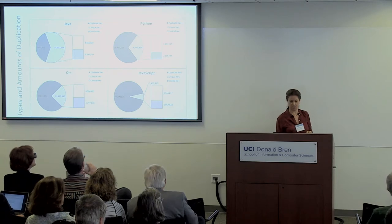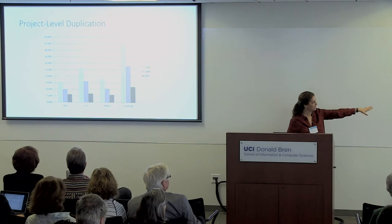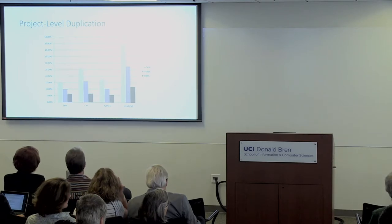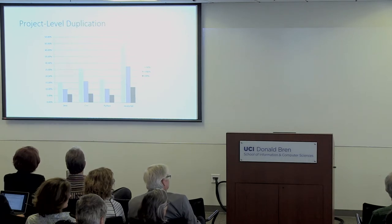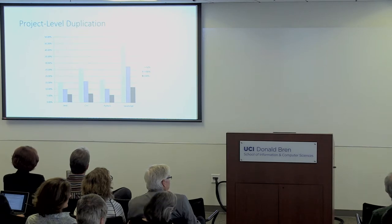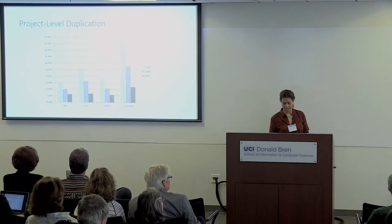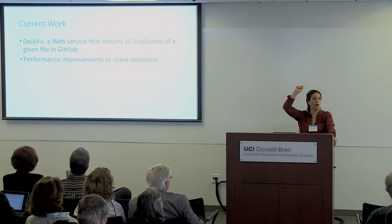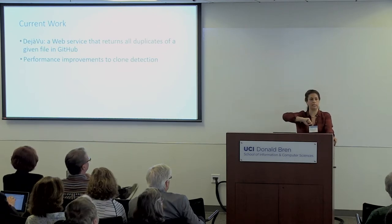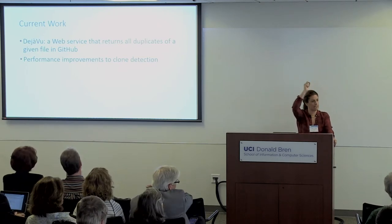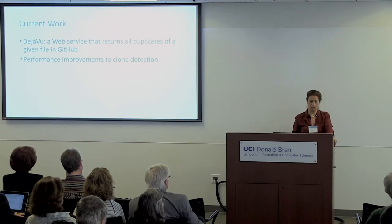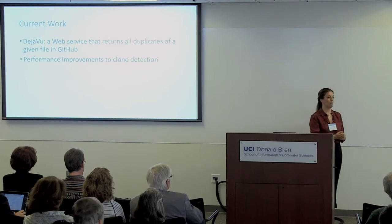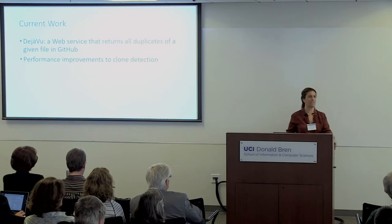We also have results for project-level duplication — how many projects are complete overlaps: 100% overlap, 80% overlap, and 50% overlap. Again, JavaScript has a fair amount of overlap of entire projects. We're currently developing a web service where you paste in a URL of a file on GitHub and it tells you all the duplicate files — with checkboxes for exact, token hash, or near duplication. We're continuing to make performance improvements on the clone detection tool.